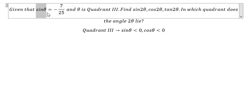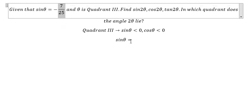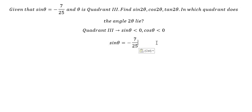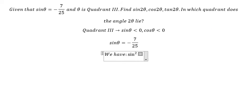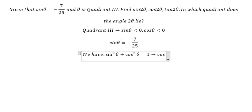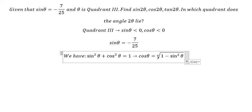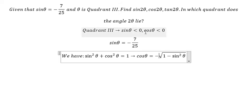So we have sin θ equals negative 7 over 25. We have the formula sin²θ + cos²θ = 1, so we want to find cos θ. That should be the square root of 1 minus sin²θ, and we apply the negative sign because cos θ is negative in this quadrant.